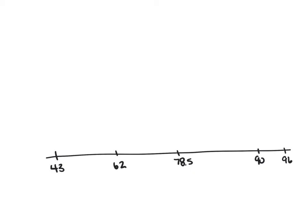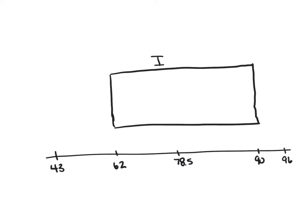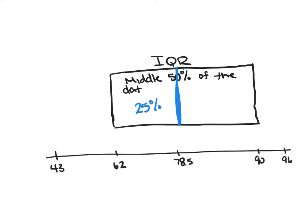A box and whisker plot starts with a scale, and we extend the whiskers from the box out to the minimum and maximum values. The box is made from Q1, which is 62, to Q3, which is 90. This box represents what we call the IQR — the interquartile range — which is the middle 50% of the data. The median of 78.5 sits in the middle of the box, with 25% of the data on each side. Together, Q1 to Q3 measures the interquartile range.